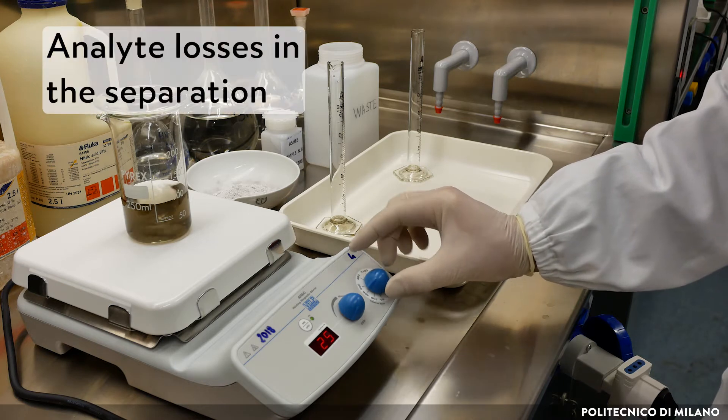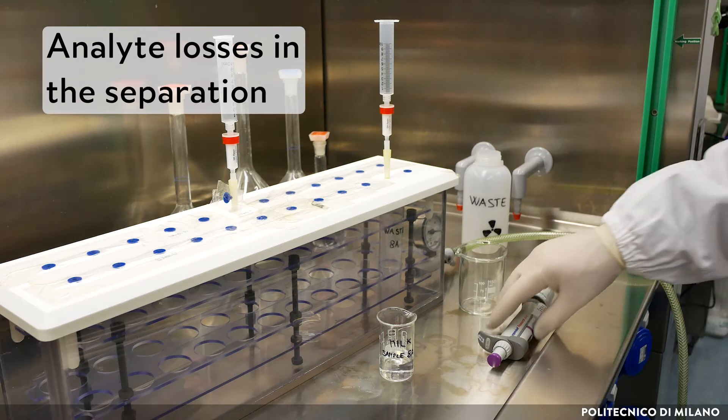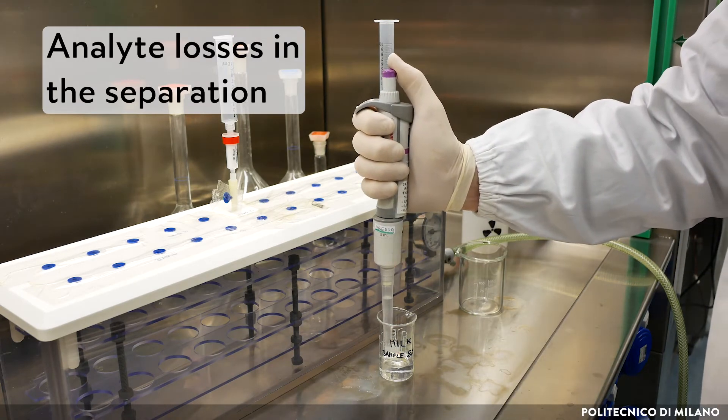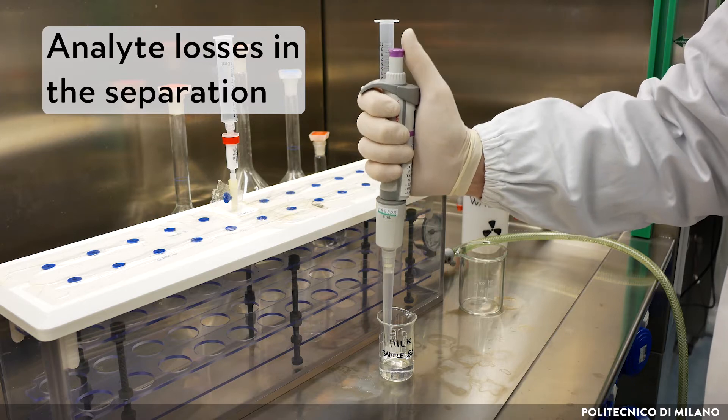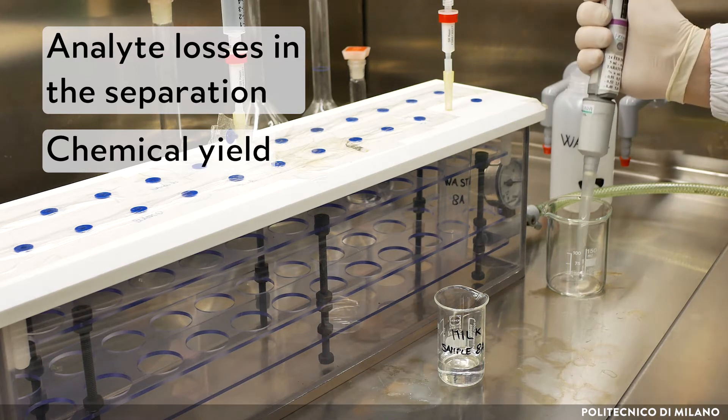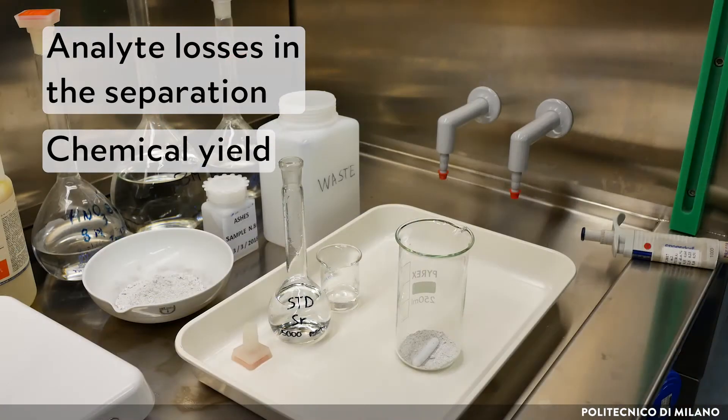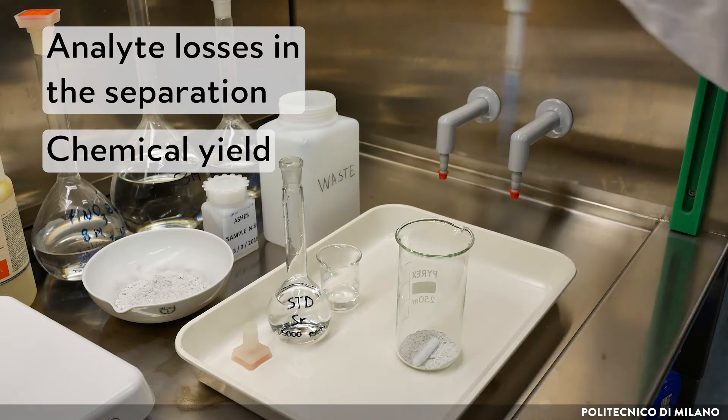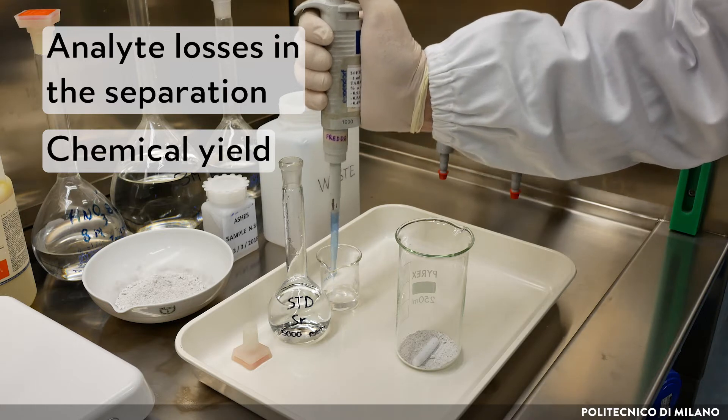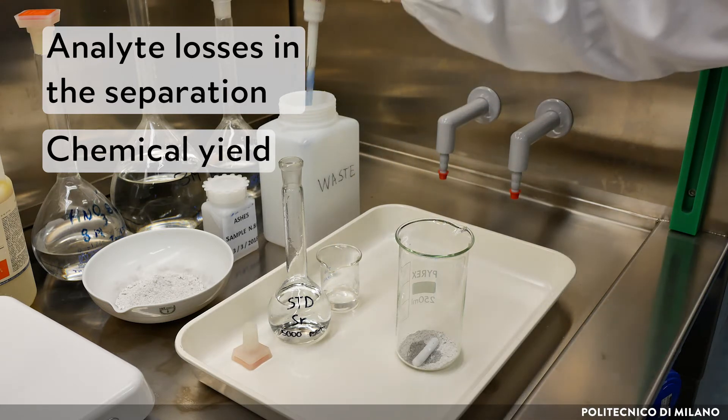During the chemical separation, not all the analyte can be separated and recovered in the final sample used for the measurement. Some portion of the analyte is lost in the separation process. To find out the proportion of the analyte recovered, the chemical yield has to be measured. The chemical yield is determined with the aid of a stable carrier or a radioactive tracer. In this case, stable strontium is used to monitor the method yield.